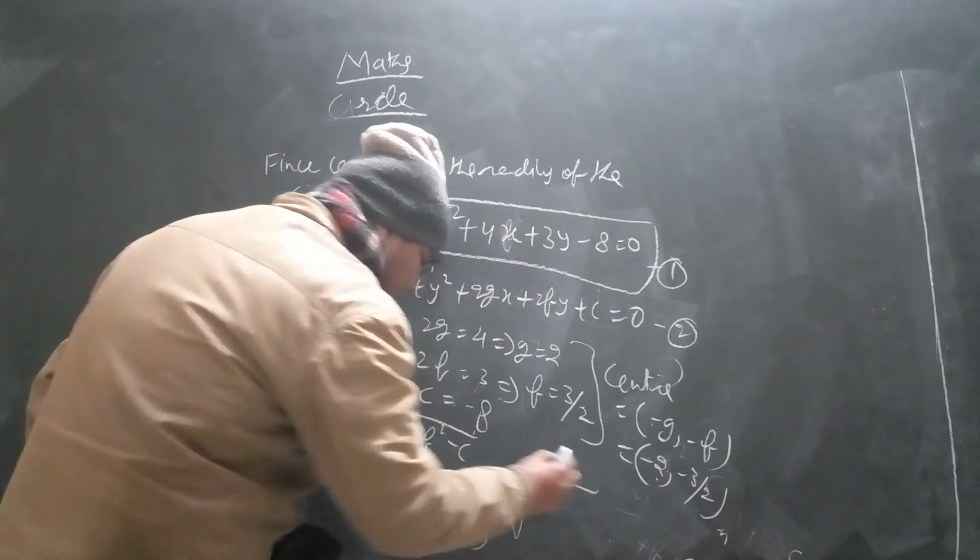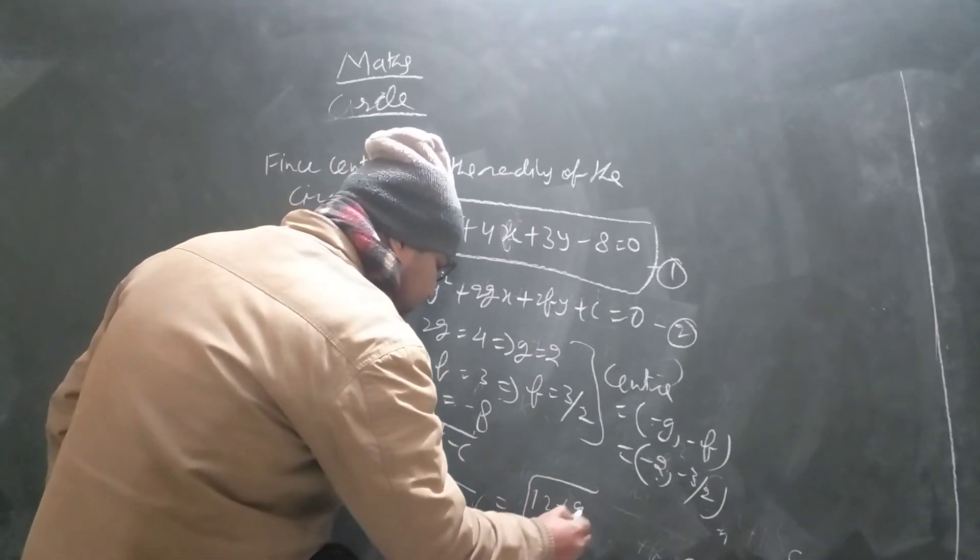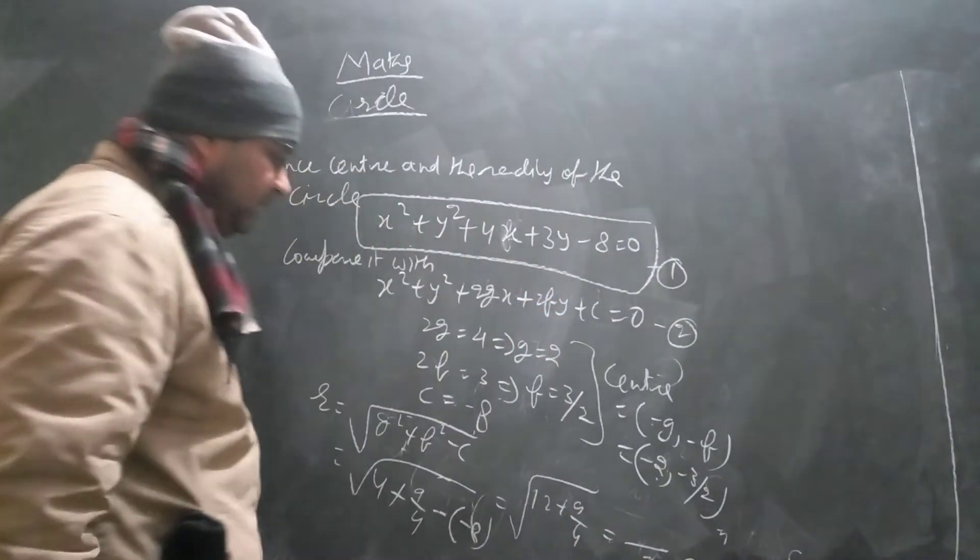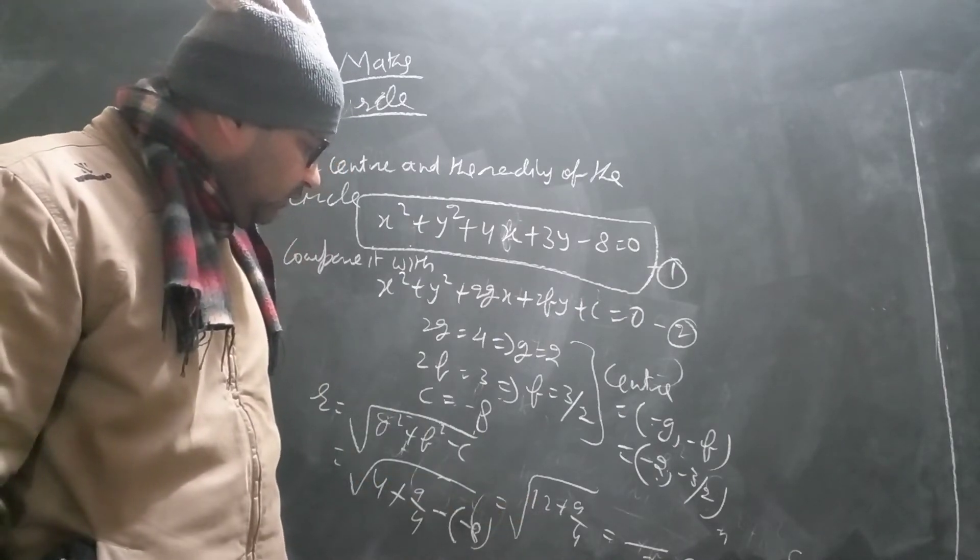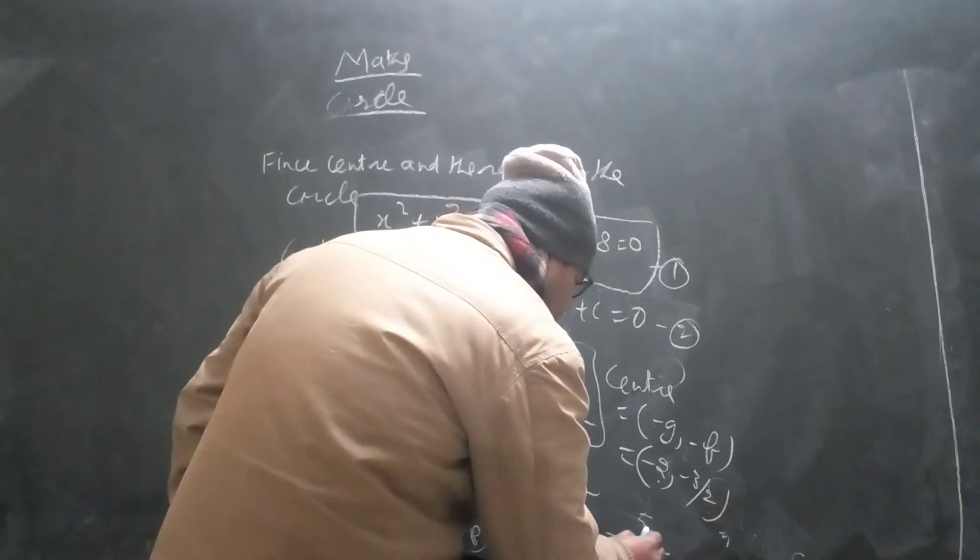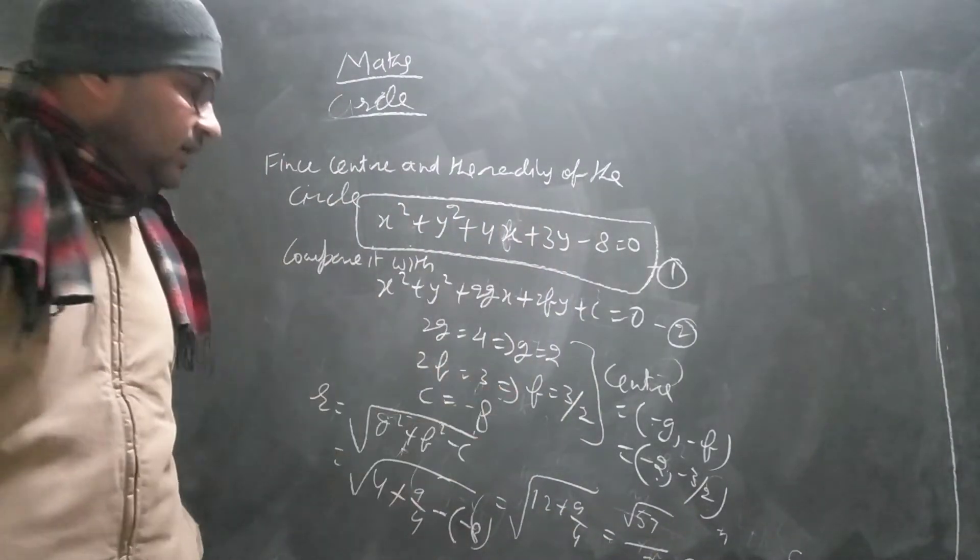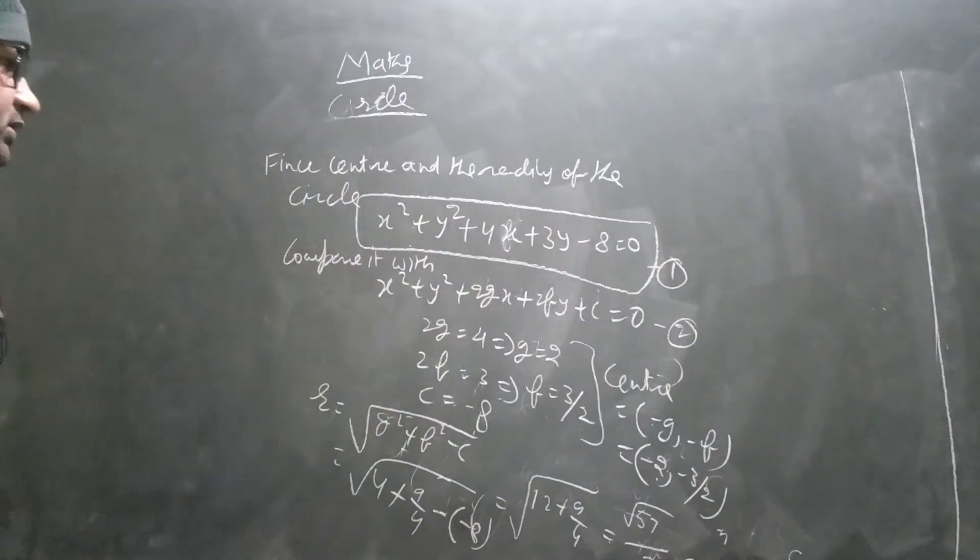Once we do the simplification, final simplification, 8 and 4 is 12, plus 9 by 4. After taking 4 as LCM, you can get under root 3 by 4, so 48 plus 9 is 57. So its radius will be root 57 upon 2, and its center will be minus 2, minus 3 by 2. Let me consider one more sum.